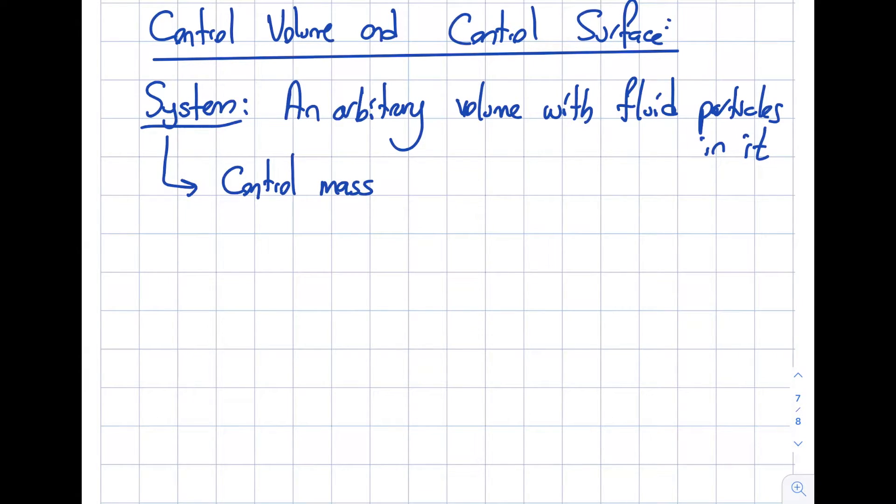Basically, this is a version of the system where—well, the name says it—you're controlling the mass. No mass crosses the boundary. This is called the control mass.